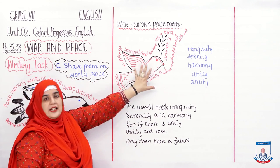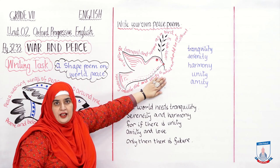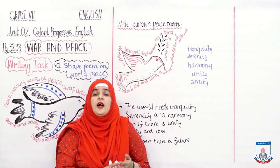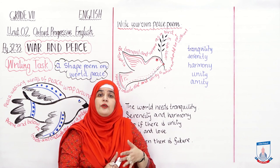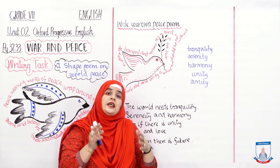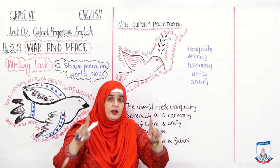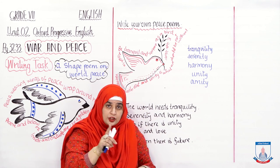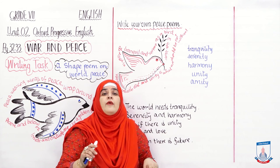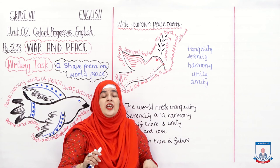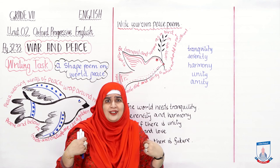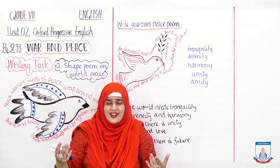Aap bhi bacche aise hi dove banani hai — dove bana ke apni peace ki poem likhni hai, jismein aap figurative language use karo, similes use karo, metaphors use karo. Yeh wale words use karo. Balki agar aap apni book dekho toh usmayn aapka vocabulary bank hai, aur uske neeche kuch examples bhi di hui hain. Aap un examples ko use karke bhi apni poem phrase out kar sakte ho.